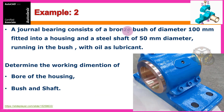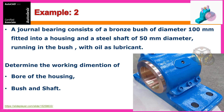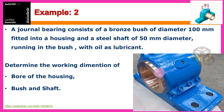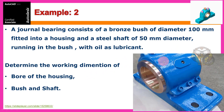Second example: a journal bearing consists of a bronze bush of outer diameter 100mm fitted into a housing, and a steel shaft of 50mm diameter running in the bush under oil lubrication conditions. Determine the working dimensions of the bore of the housing, the bush, and the shaft.